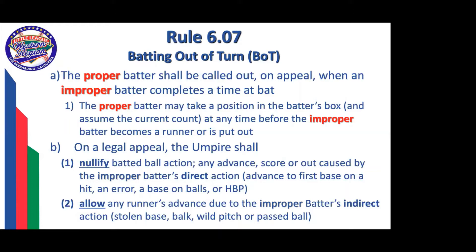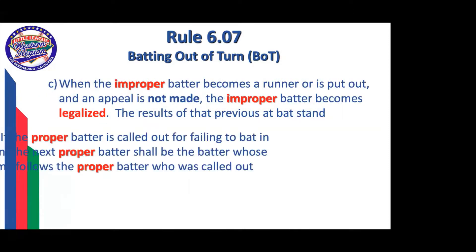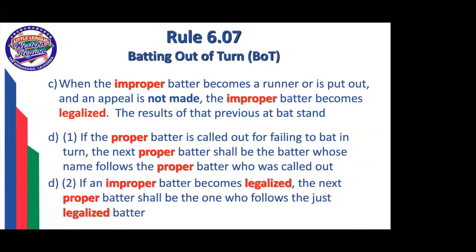On the illegal appeal, the umpire shall take one of two actions. If you have a batted ball situation — such as an advance, a score, or an out caused by the improper batter's hitting of the ball — that's direct action, and that action is nullified. The advance to first base on a hit, an error, a base on balls, or hit by pitch is removed and the proper batter is called out. Also, if you have a runner who steals, there's a balk, a wild pitch, or a passed ball — basically the improper batter's indirect action — the improper batter was simply standing there, and those are allowed to stand.